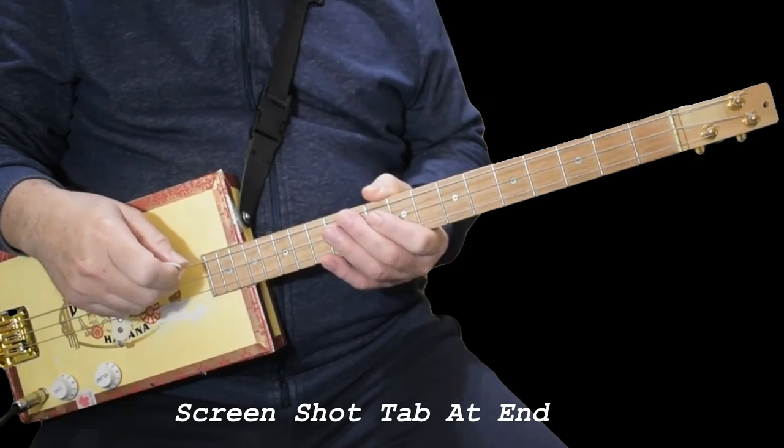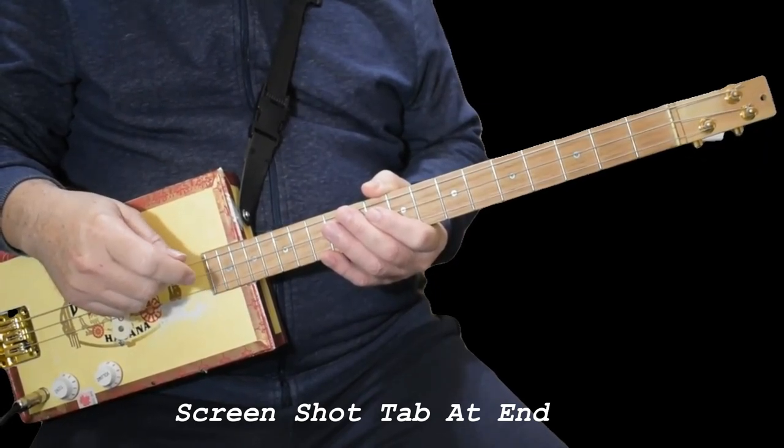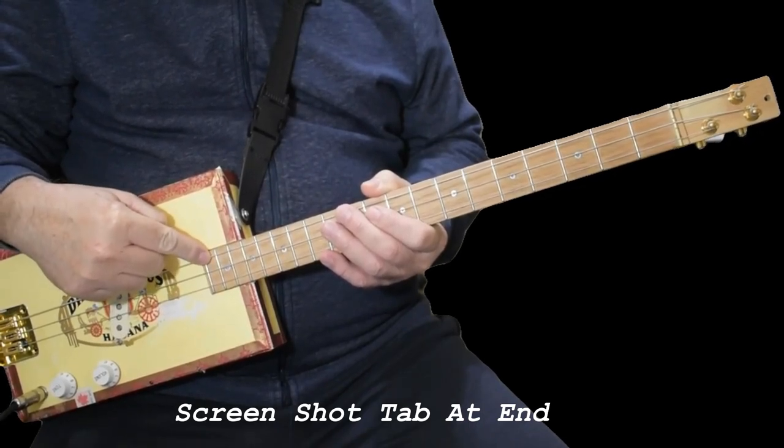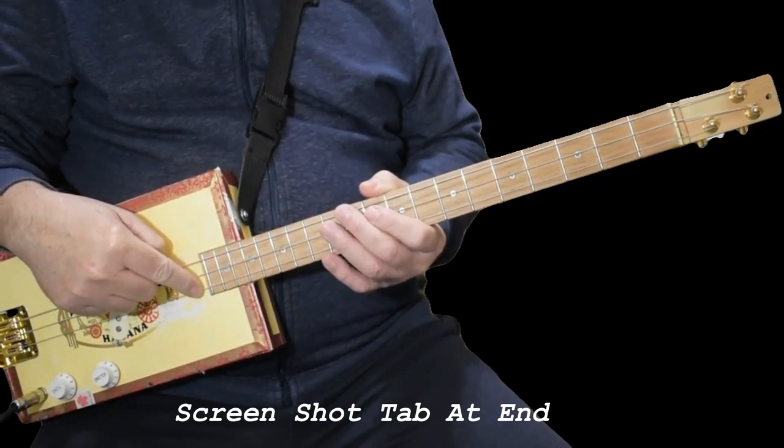Hi, today I'd like to show you how I play Back in Black by AC-DC. I'm tuned to E, low E, B in the middle, high E.